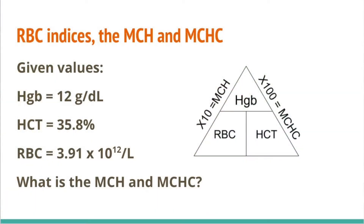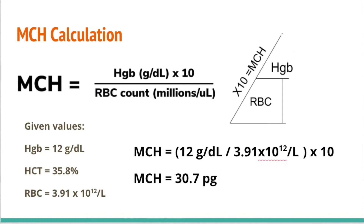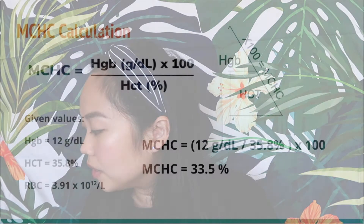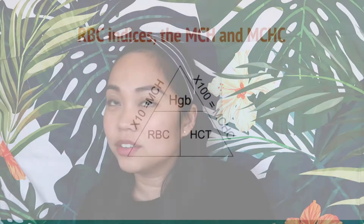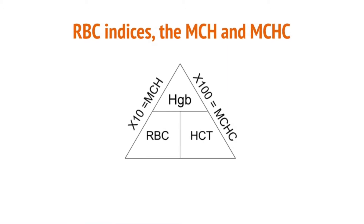To help memorize the formulas for MCH and MCHC, there is a triangle shortcut. Hemoglobin is at the top, and RBC and hematocrit are at the bottom. On the left side of the triangle: MCH equals hemoglobin divided by RBC, times 10. On the right side: MCHC equals hemoglobin divided by hematocrit, times 100. This is an easy way to remember the formulas.